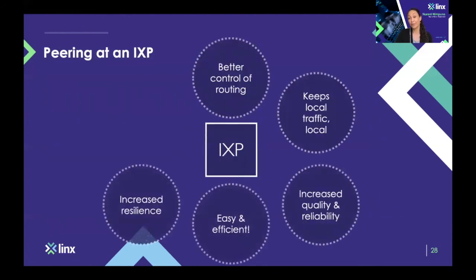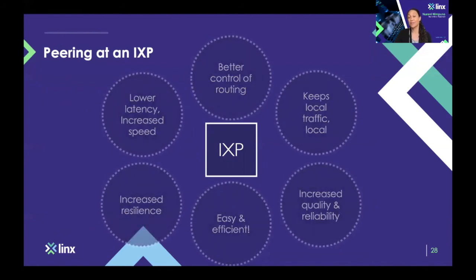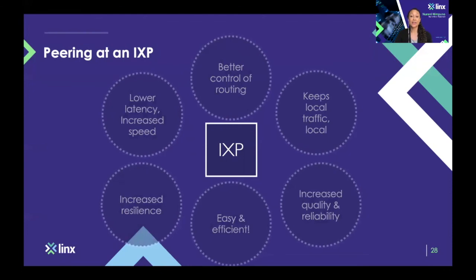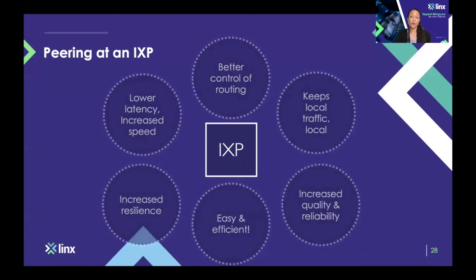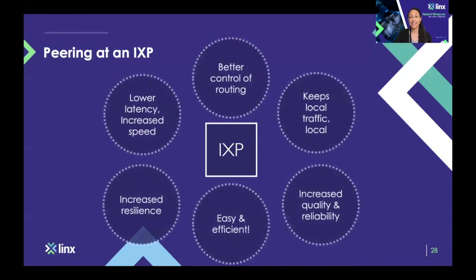To sum it up, peering at an IXP gives you better control over your routing, it keeps local traffic local, it allows you to improve the performance of your traffic exchange, lower the latency and improve the speed. And of course, peering at an IXP is a very simple and efficient way of exchanging traffic with many other networks on the internet.